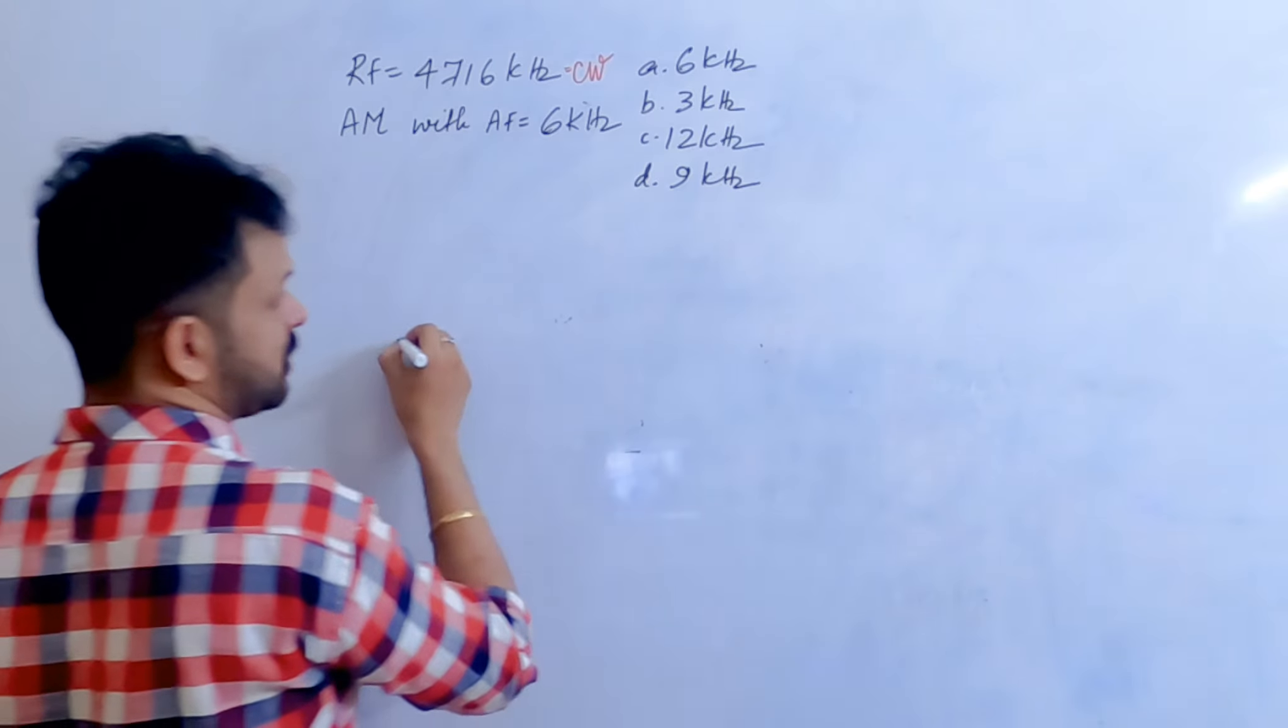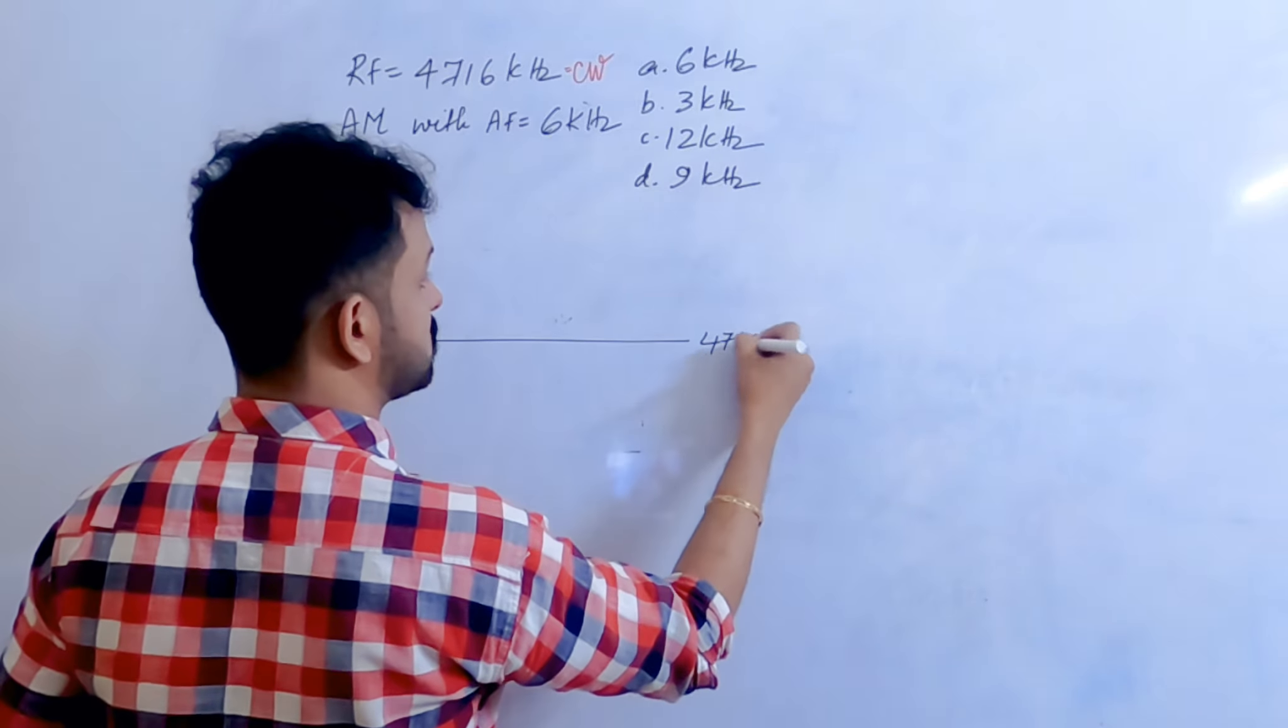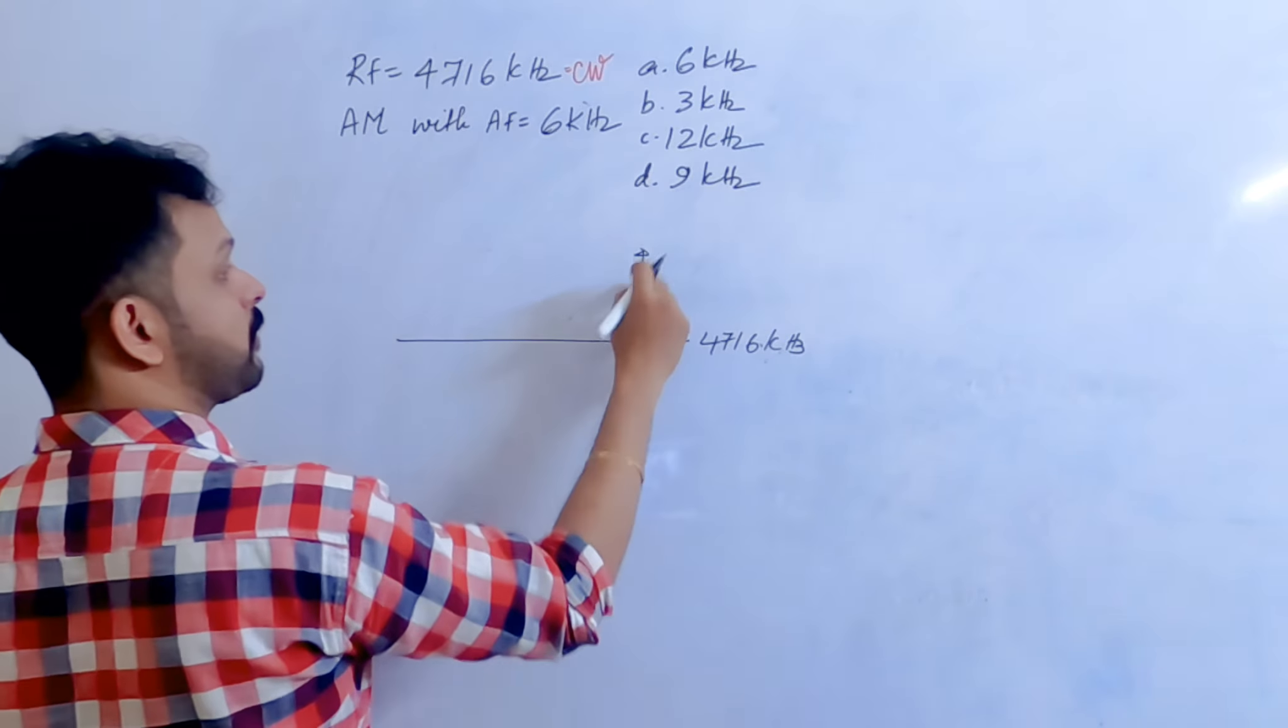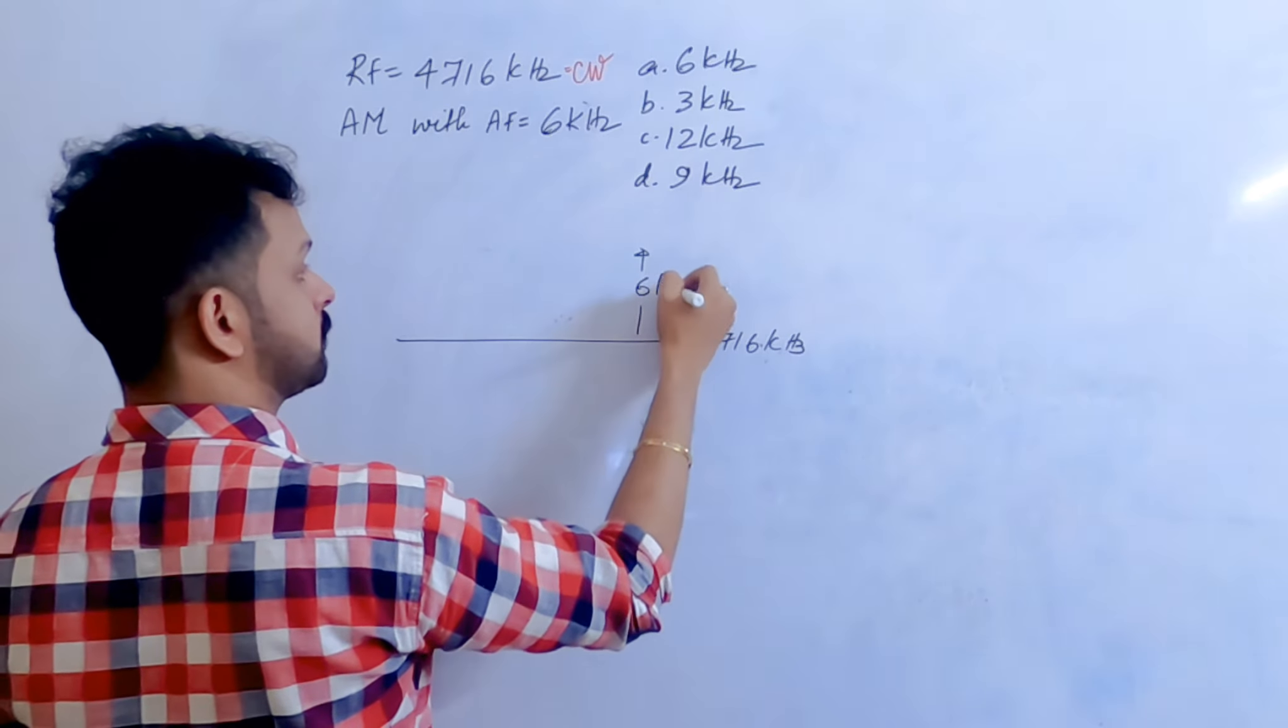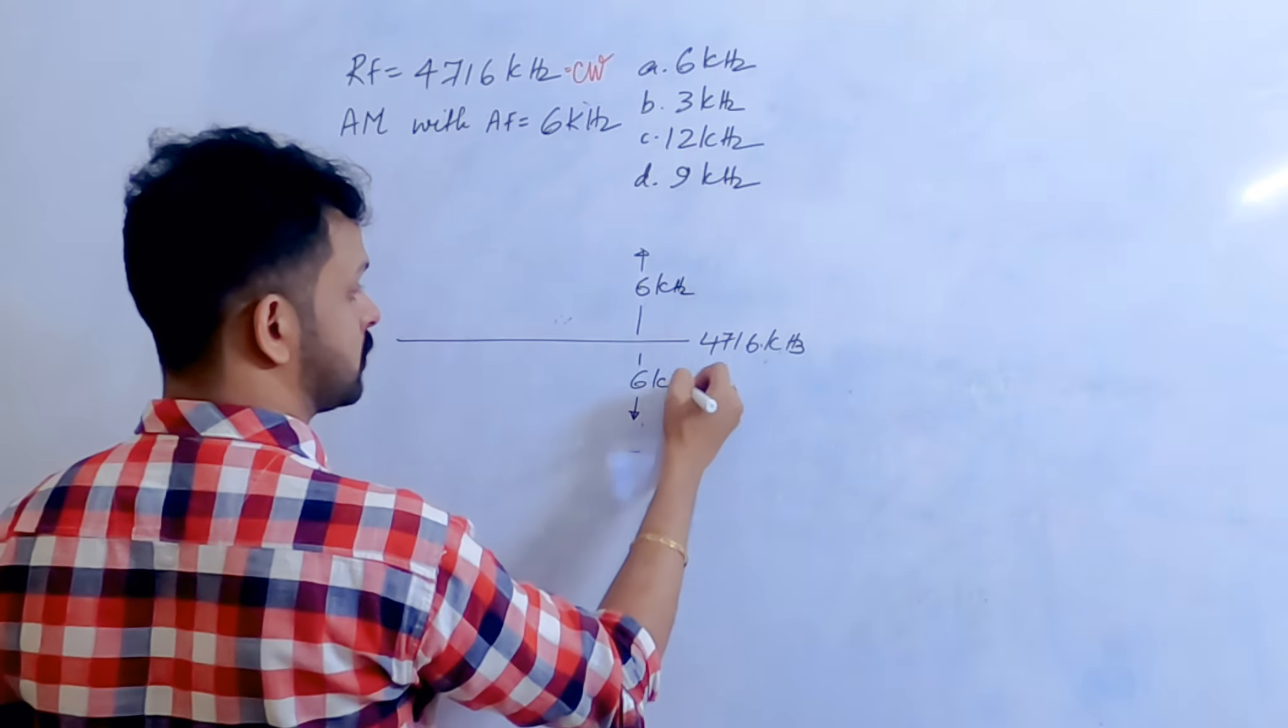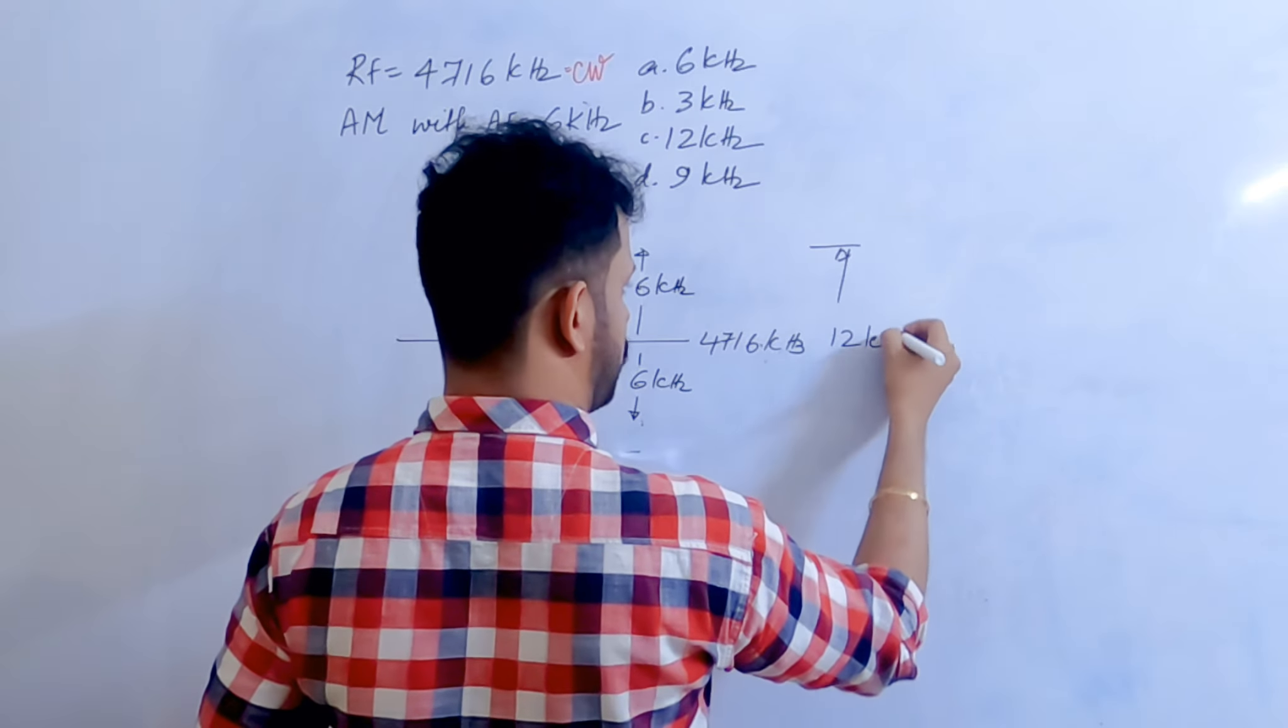As we discussed in the previous class, we have this carrier wave frequency of 4716 kHz, and the bandwidth produced will be 6 kHz on both sides. So what's the total band? We have seen this...